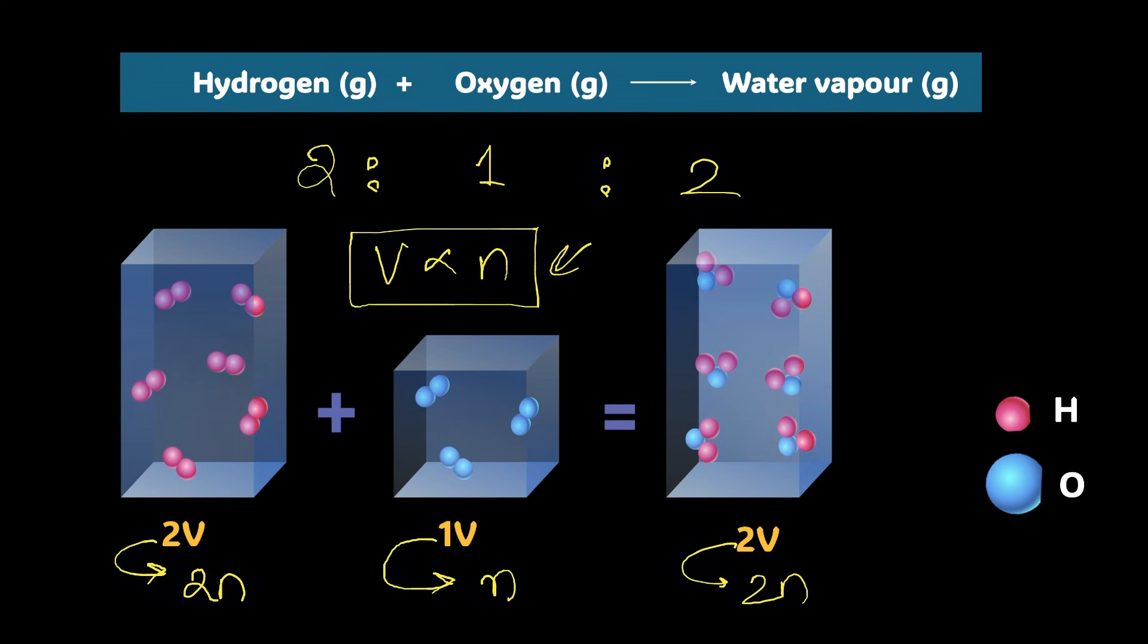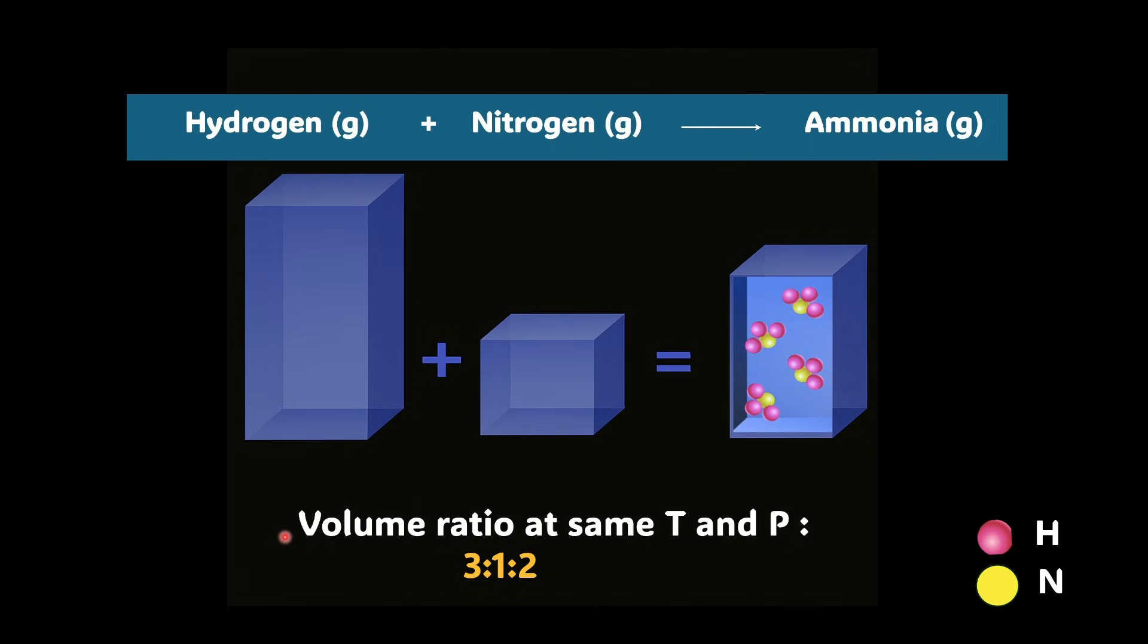Now that you have understood volume is directly proportional to the number of molecules at the same temperature and pressure, I have a question for you. Let's try to apply this law here. I experimentally give you the volume ratio of the formation of ammonia from hydrogen and nitrogen to be 3 is to 1 is to 2.